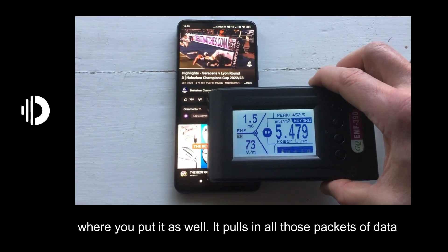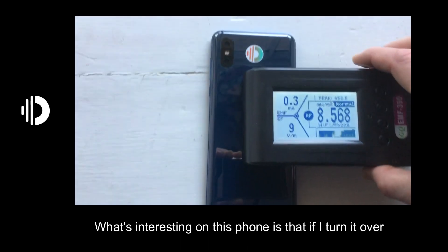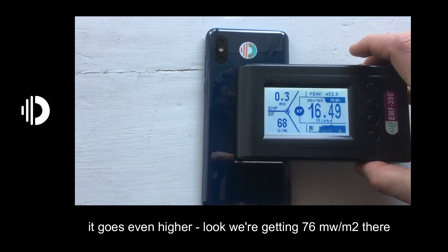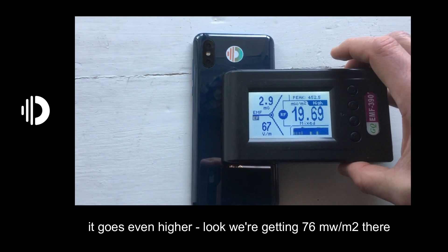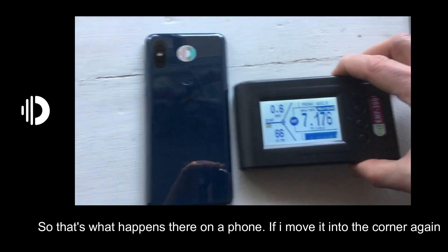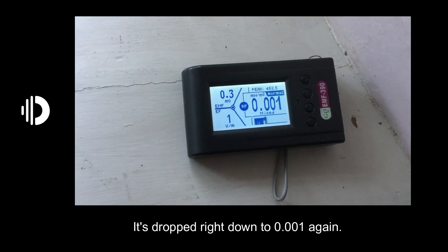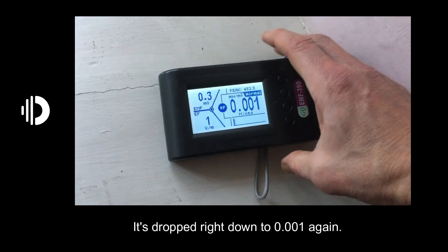What's interesting on this phone is that if I turn it over, sometimes it goes even higher, like 76 there. Anything that beeps is not good news. So that's what happens on the phone. If I move it into the corner again, it's dropped right down to 0.001.